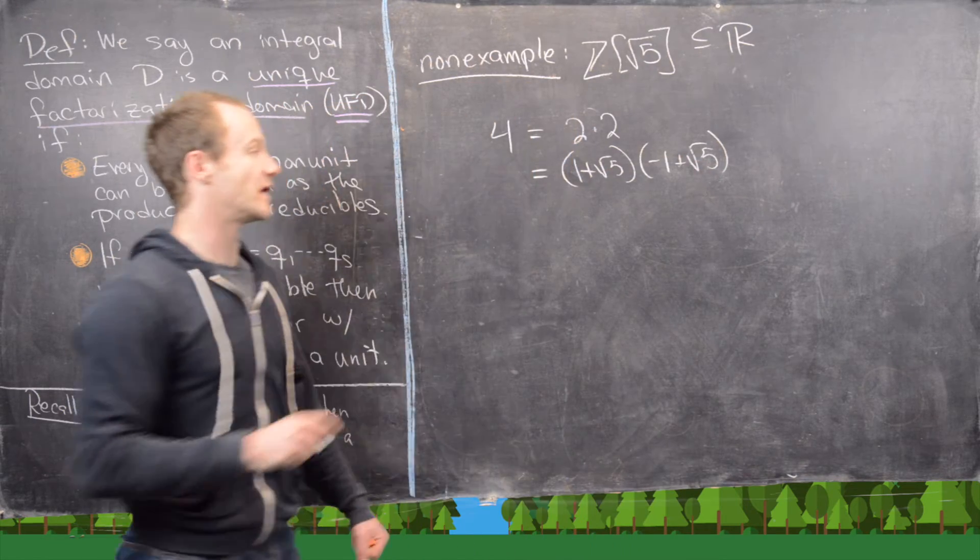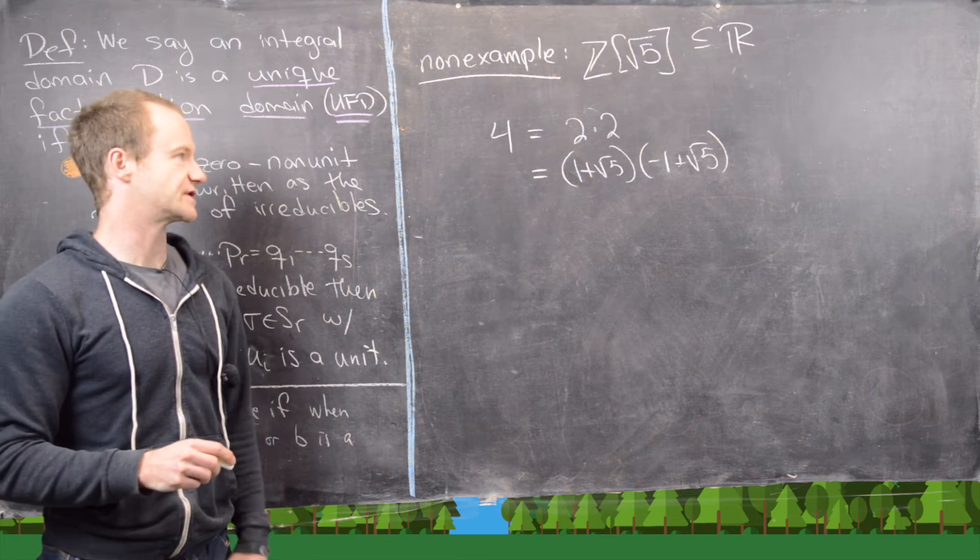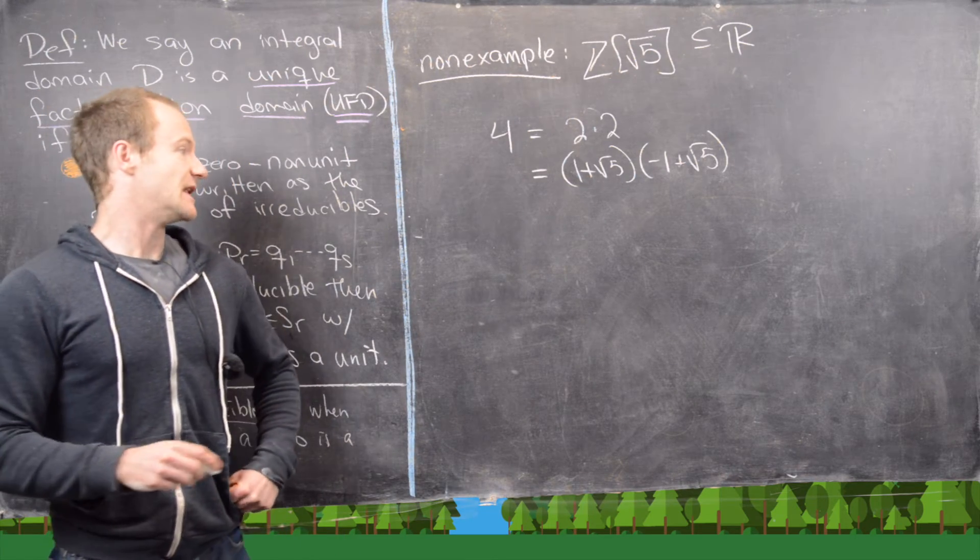So notice if we were to foil that out, we would get negative 1 plus 5, which is 4. Okay, fantastic. But now, in order for this to be a UFD.